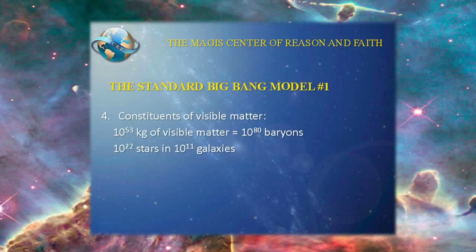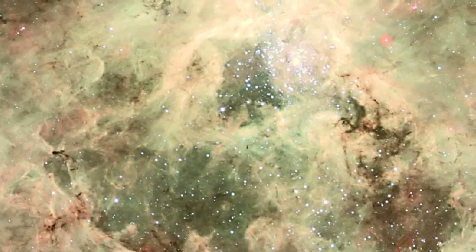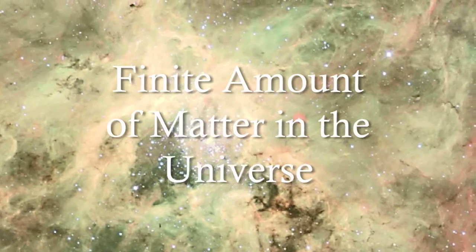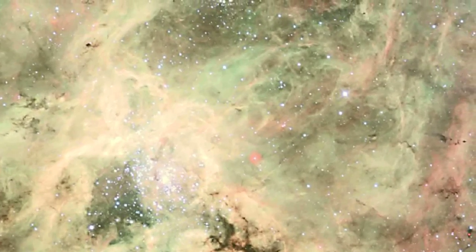This visible matter emits light, absorbs light, and does things electrical and luminescent. There is a very finite amount of visible matter — approximately 10 to the 53 kilograms. That's very different from the universe of Sir Isaac Newton, who assumed the universe was infinite in time and infinite in mass. The amount of visible matter amounts to 10 to the 80 baryons. A baryon is a proton or a neutron, which carries the major amount of rest mass in the universe. That's a very finite number.